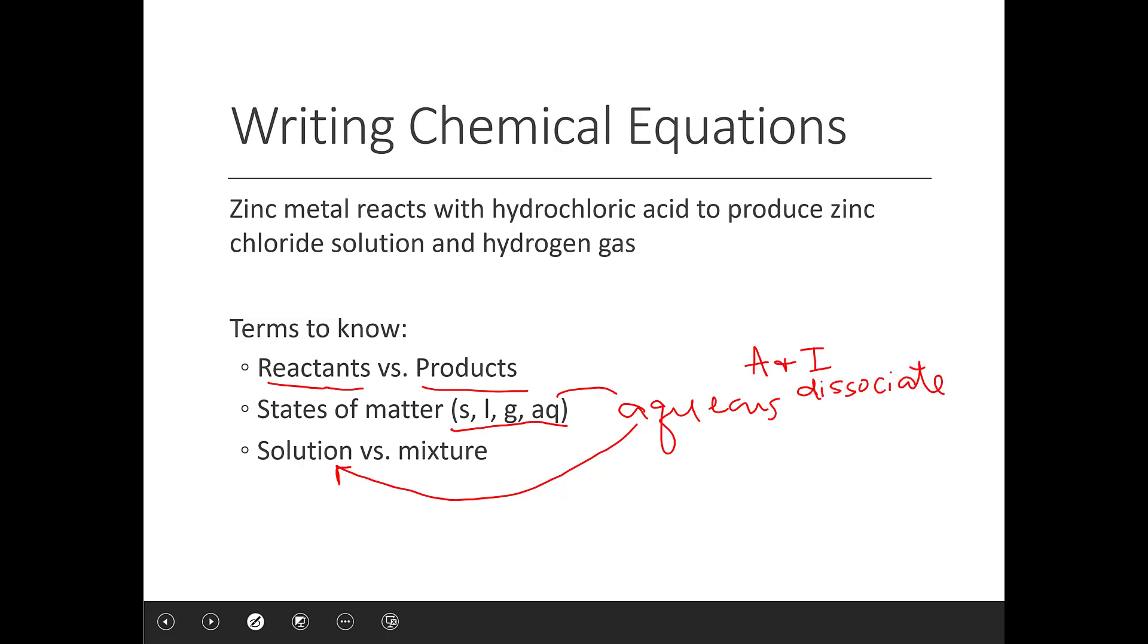So let's look at this first example here. Zinc metal reacts with hydrochloric acid to produce zinc chloride solution and hydrogen gas. I'm just going to break this down for you, starting here with zinc metal. So the chemical symbol for zinc is Zn.